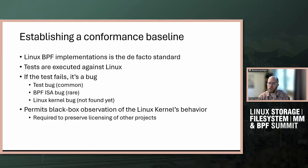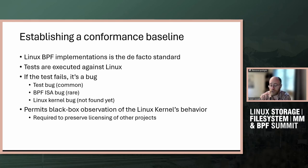One of the things we do is establish a baseline of what tests work. All the tests are executed against the Linux kernel. The goal is to determine: if something fails, is it a test bug — which is the most common case — or whether the BPF ISA wasn't correctly specified. The remaining possibility is that it could be a Linux kernel bug, though I haven't found one yet.